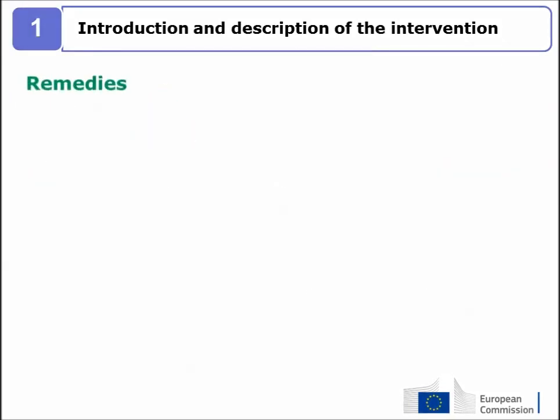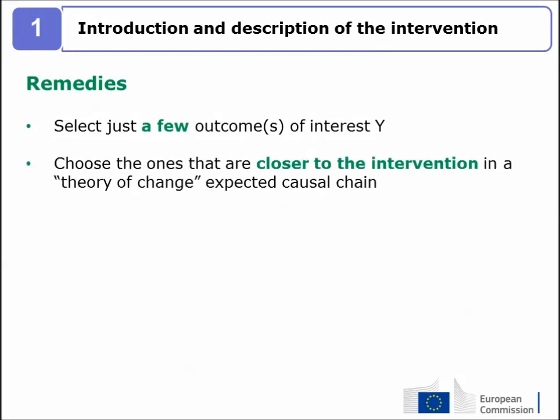To avoid this, select just a few outcomes of interest. Choose the ones that are closer to the intervention in a theory of change expected causal chain.